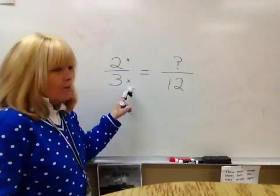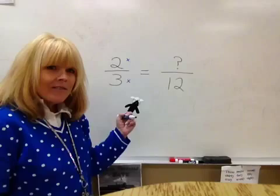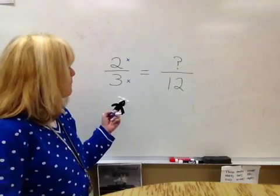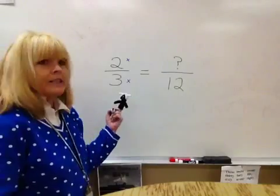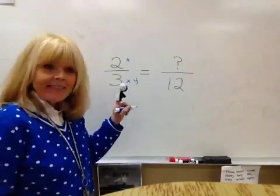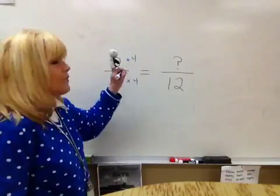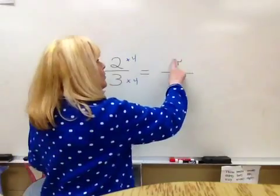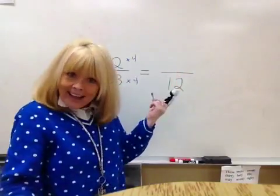3 times what little baby number will give you 12? 3 times what little baby number will give you 12? 3 times 4! 3 times 4 will give you 12. Bring that little baby 4! 4 times 2 is 8. So what goes in that spot? An 8!